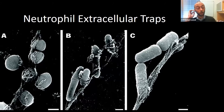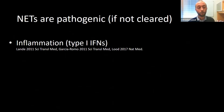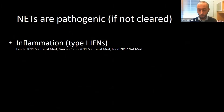NET formation is an important mechanism in host defense. However, we need it to be well regulated. If we can't regulate NET formation, if we have too many NETs being formed, or if we lack the capacity to clear them efficiently, they may lead to harm. We and others have demonstrated that NETs can induce inflammation through DNA sensors, activate the endothelium causing endothelial death and atherosclerosis, trap platelets causing platelet activation and thrombosis formation, and promote tumor growth, proliferation, and metastasis.